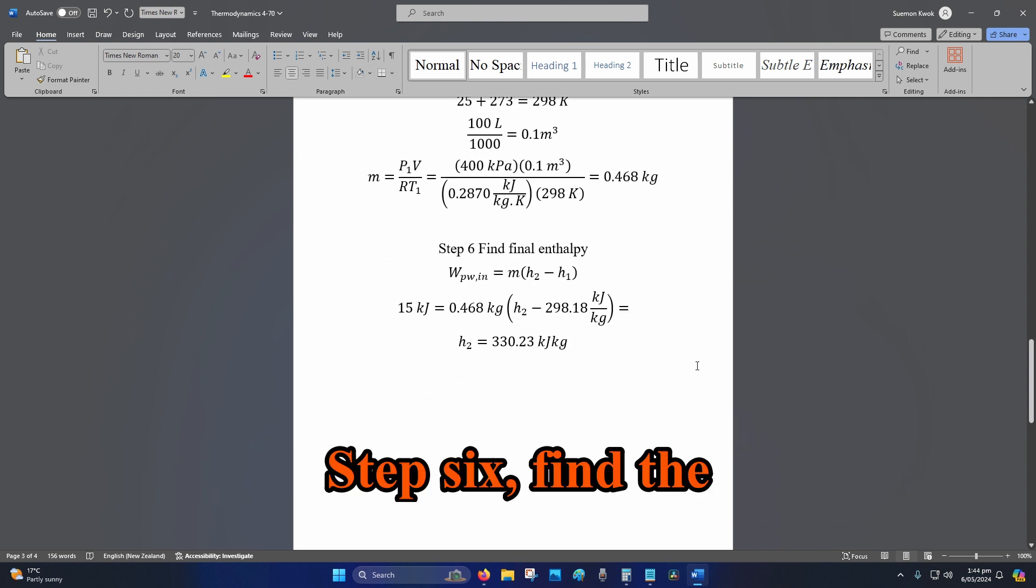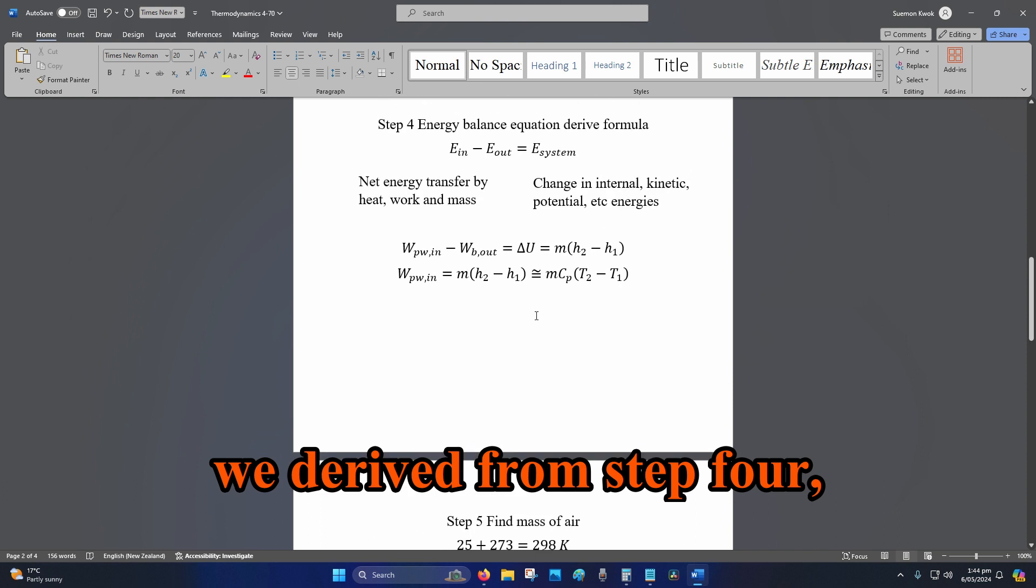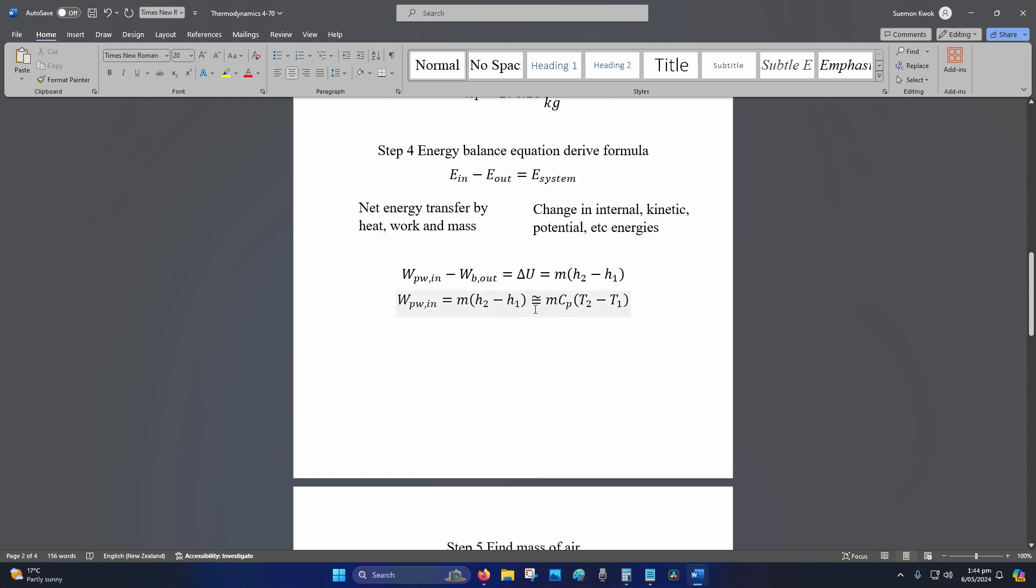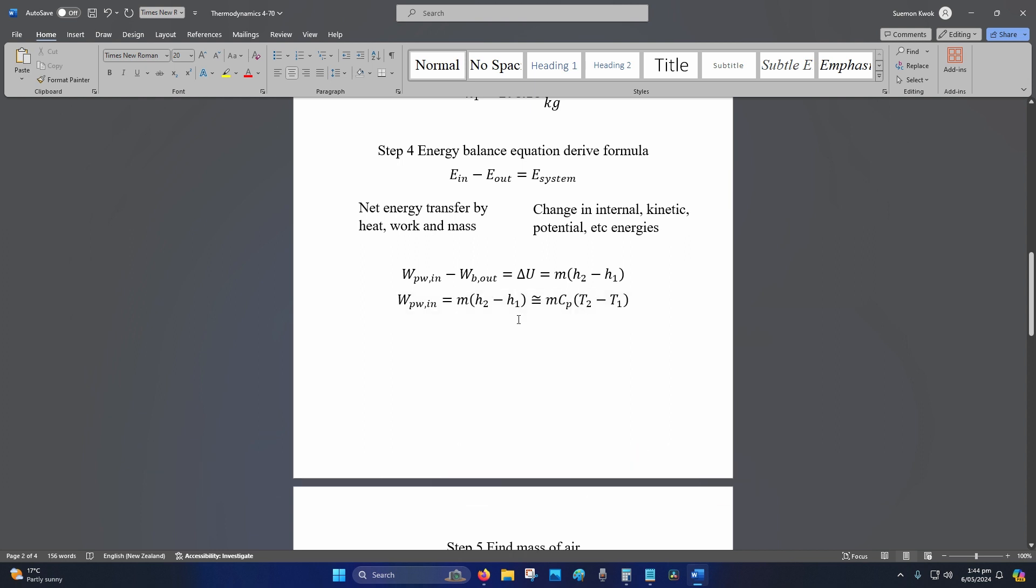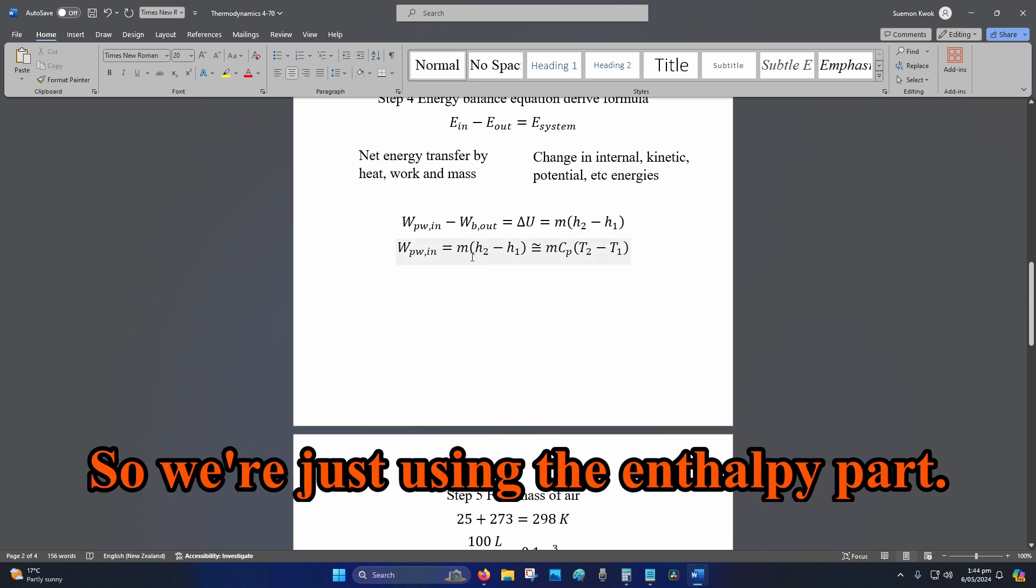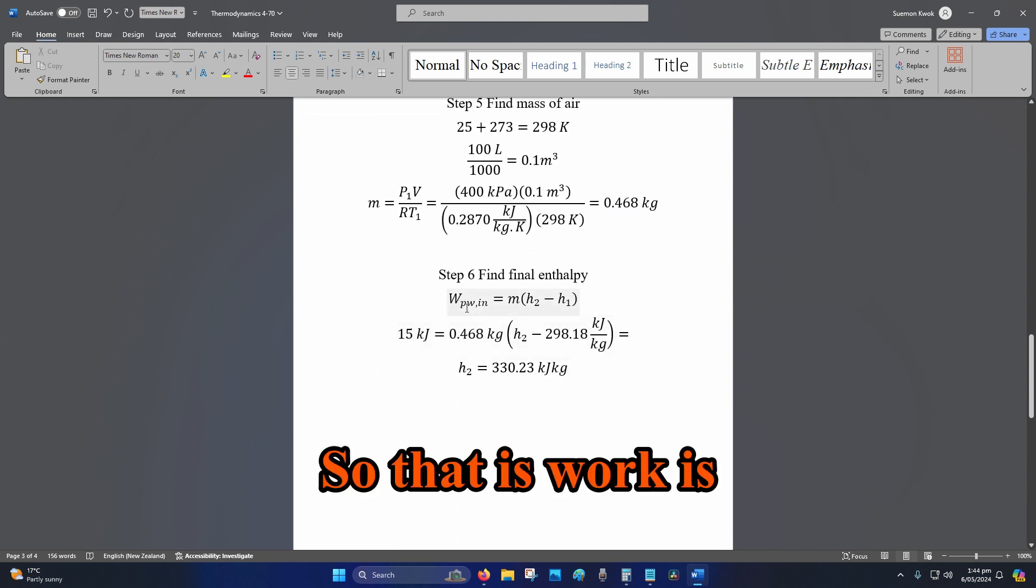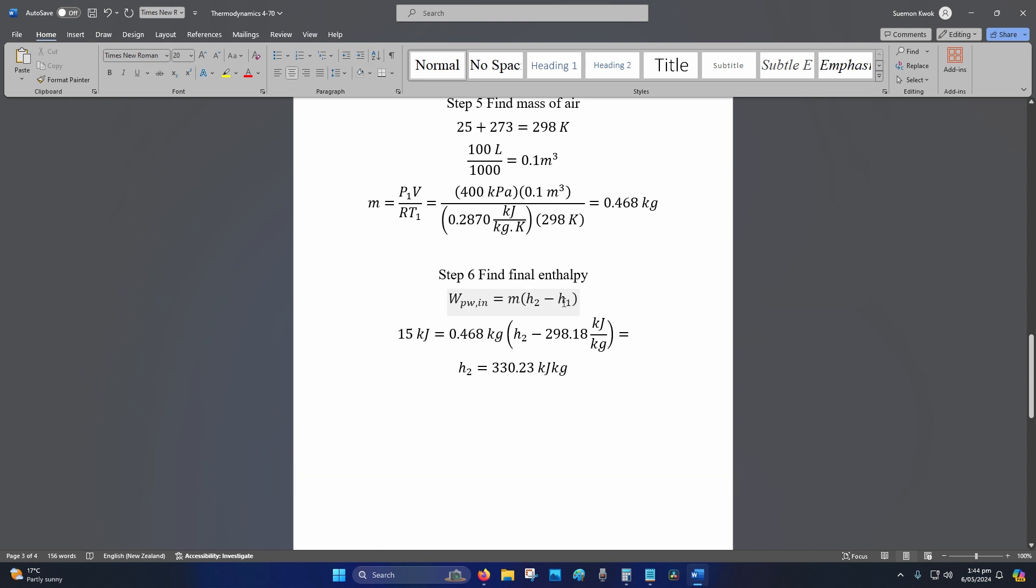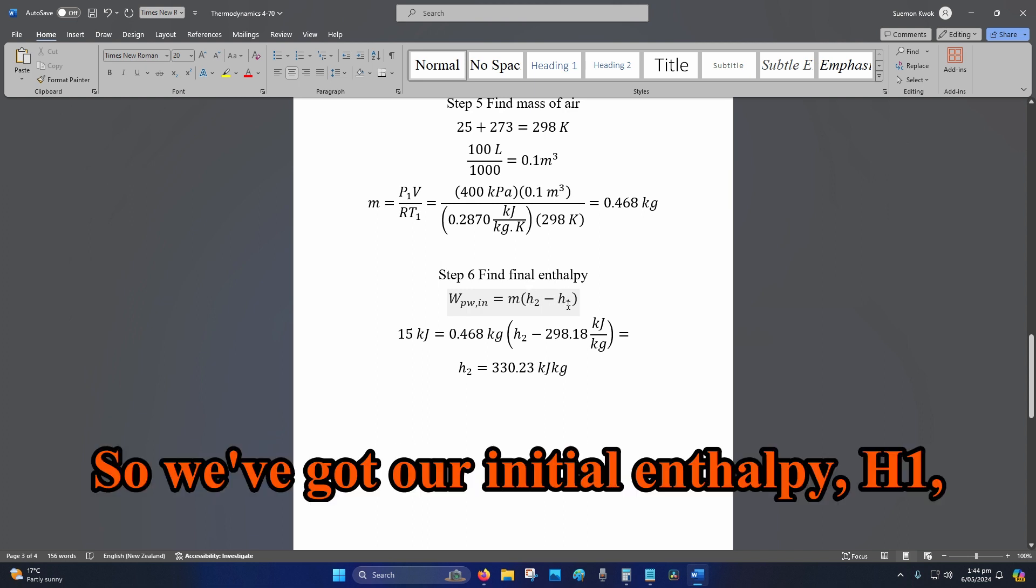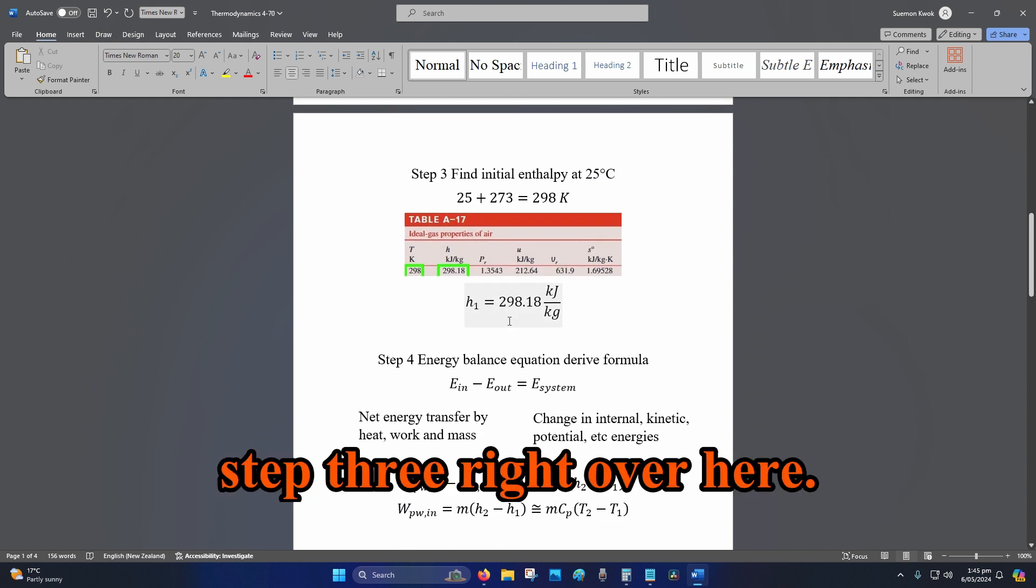Step six: find the final enthalpy, our h2. So using the formula that we derived from step four, we are using this portion, we're going to ignore this portion. So we're just using the enthalpy part. So that is work is equal to mass multiplied by the difference in enthalpy. So we've got our initial enthalpy h1, which is what we found in step three right over here.